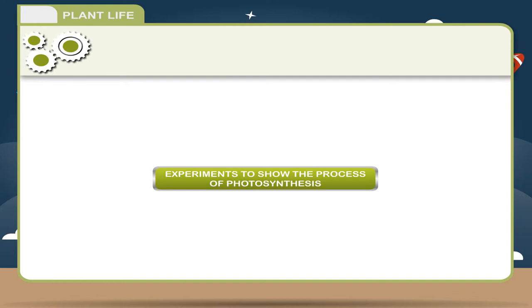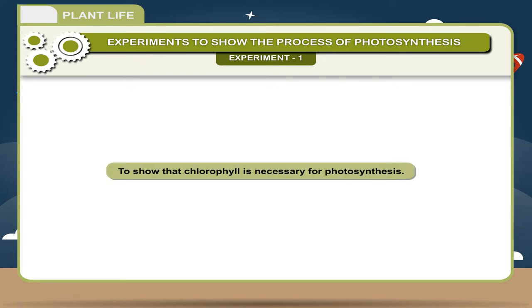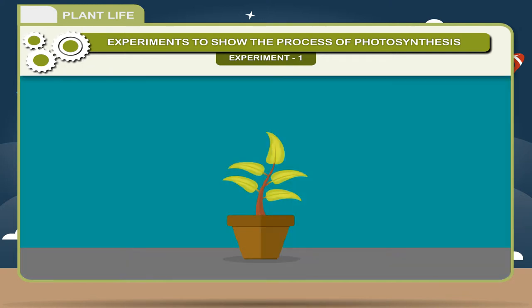Experiments to show the process of photosynthesis. Experiment 1: To show that chlorophyll is necessary for photosynthesis. Take a plant with variegated leaves having some green and some non-green areas.